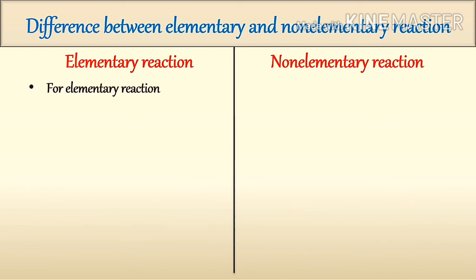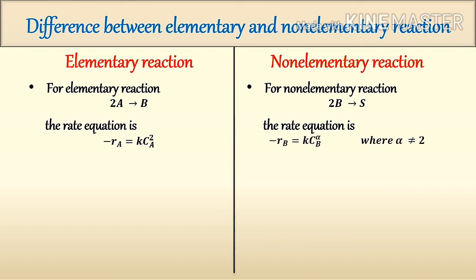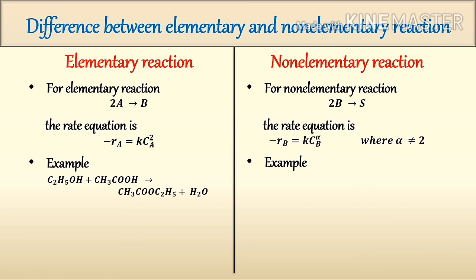For an elementary reaction 2A → B, the rate equation is -rA = k · CA². For a non-elementary reaction 2B → S, the rate equation is -rB = k · CB^α, where α ≠ 2. An example of an elementary reaction is C₂H₅OH + CH₃COOH → CH₃COOC₂H₅ + H₂O. Examples of non-elementary reactions are H₂ + Br₂ → 2HBr, and CH₃CHO → CH₄ + CO.